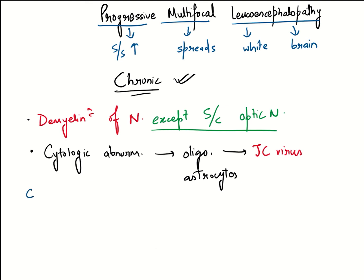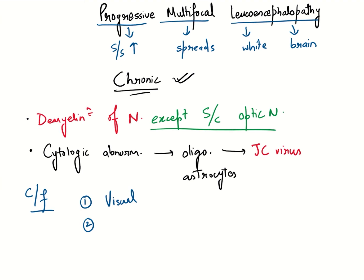Moving on to the clinical features, you will see the most common will be visual deficits including homonymous hemianopia. Other deficits include dementia, confusion, weakness of the limbs like hemiparesis or monoparesis, ataxia, and seizures if the cortex is involved.